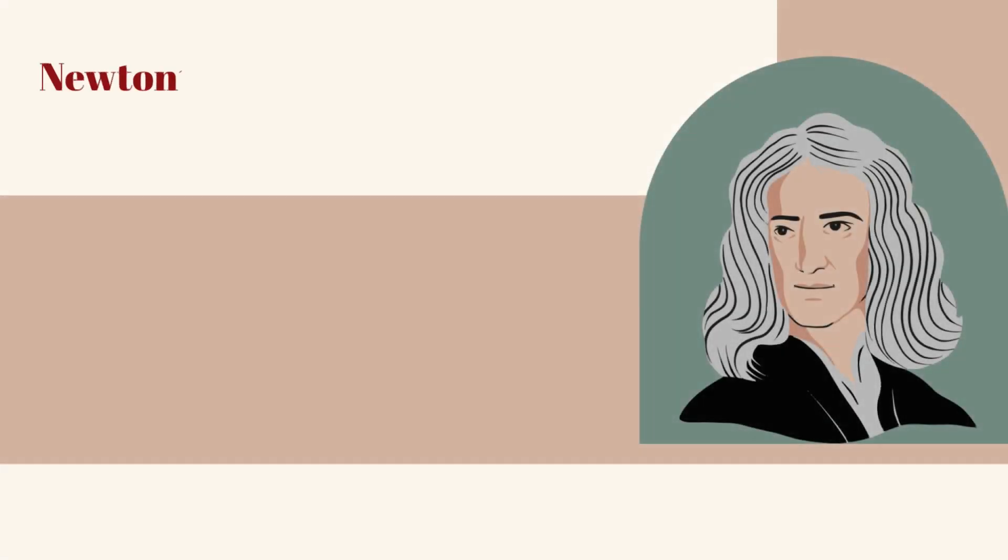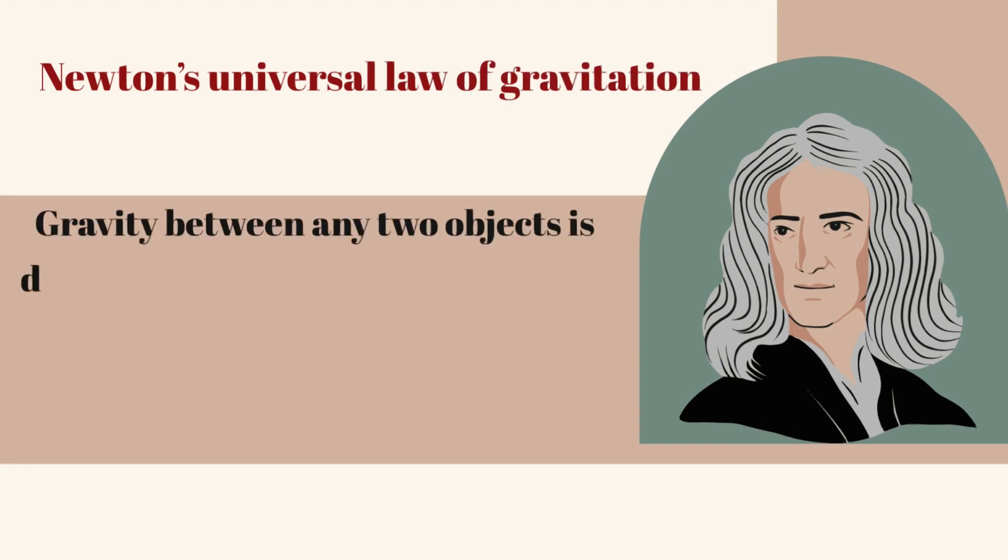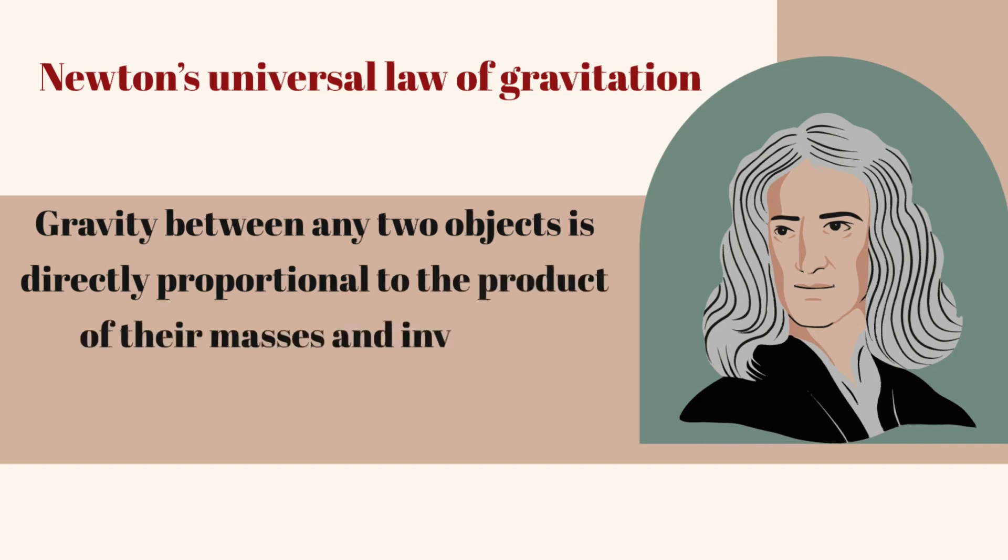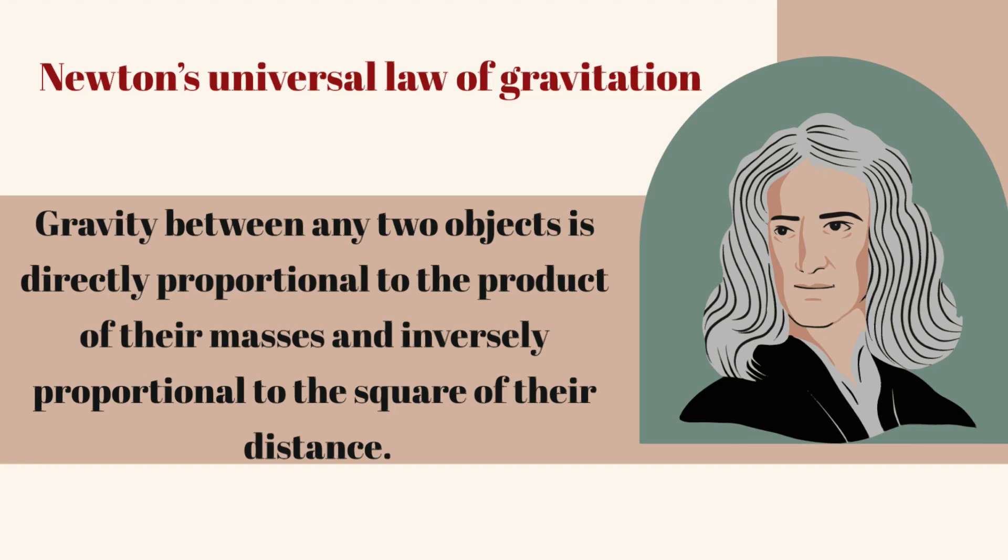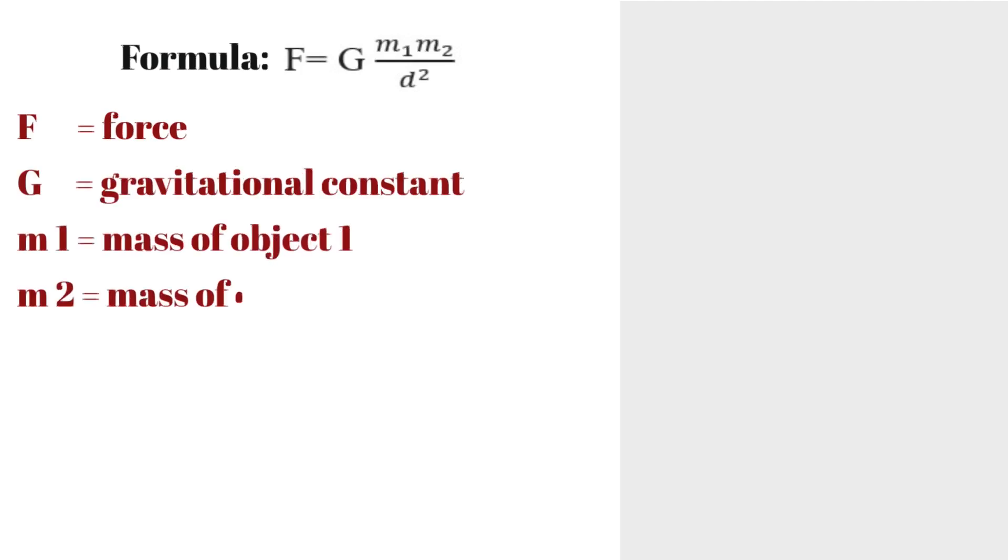So the gravity between any two objects is directly proportional to the product of their masses and inversely proportional to the square of their distance. You can understand this by looking at the diagram below. The formula becomes F = G(m₁m₂)/d², where F is force and G is the gravitational constant.